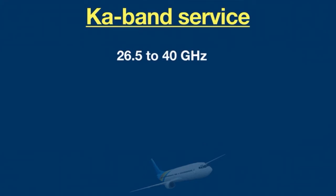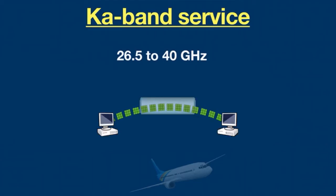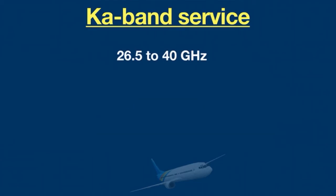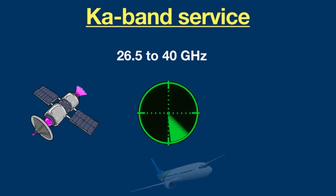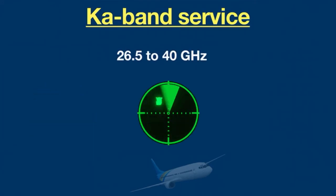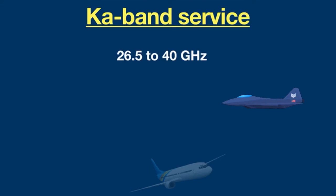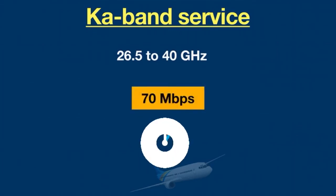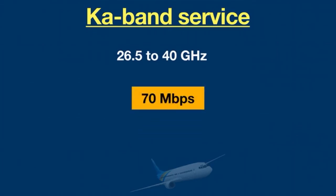With a higher frequency, you can extract more bandwidth from a Ka-band system, which means a higher data transfer rate and therefore higher performance. Ka-band is widely used in satellites, radars, vehicle detection, military purposes, and aeroplanes. Ka-band provides the most advanced high-speed satellite Wi-Fi — up to 70 megabits per second to each aeroplane.